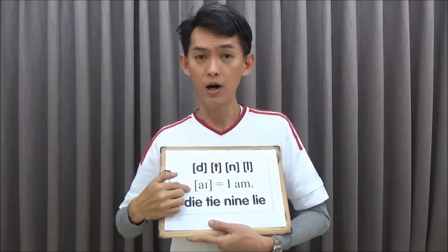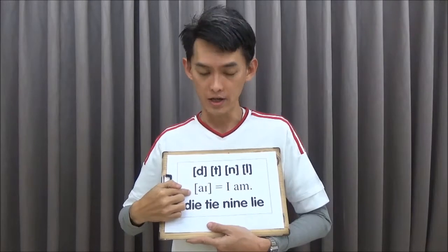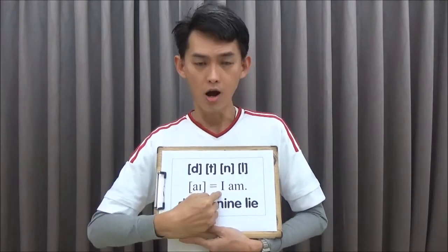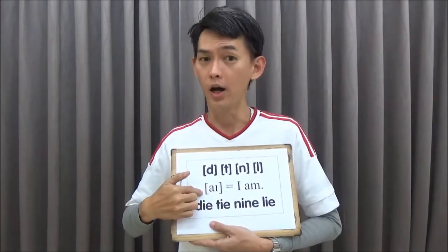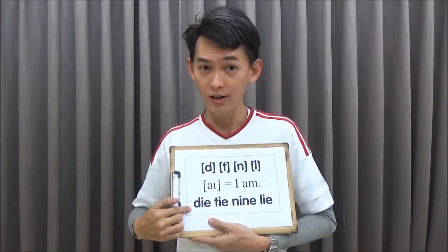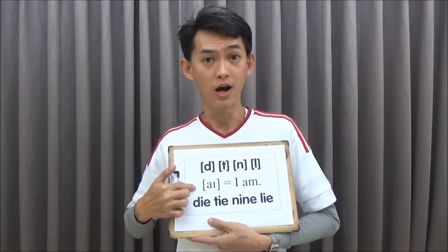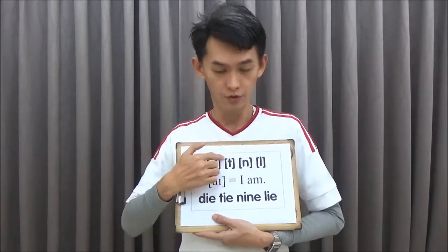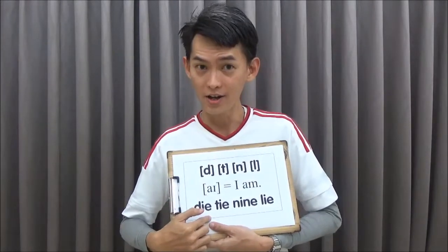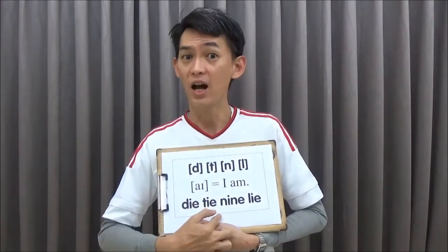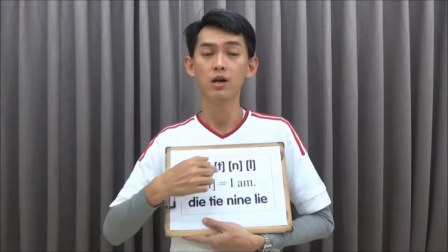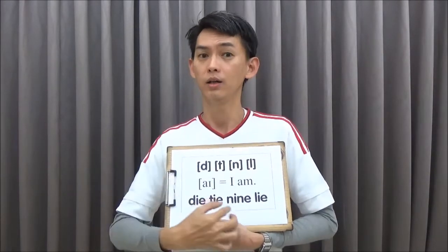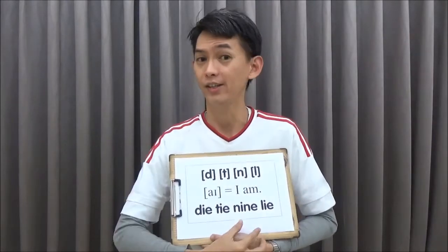And if we add a vowel here — I, as in 'I am' — we have D + I = 'die', T + I = 'thai', N + I = 'nine', and L + I = 'lie'. Isn't it just like Chinese?